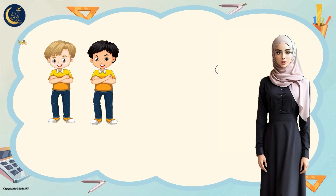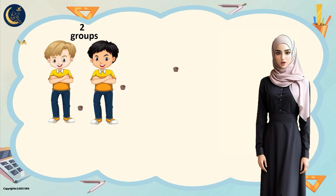The four pieces of chocolate represent the items, and each of Sami and Rummy represent the groups. So how do we distribute four items to two groups? Let's give Sami a piece and Rummy a piece, then we give Sami another piece and Rummy another piece. Now we have divided the chocolate equally.